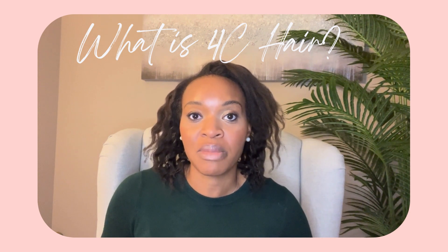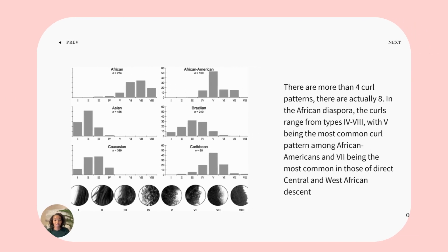I've seen curl patterns that are much tighter, and that's what prompted me to do this video. I want to show you a curl typing system that goes from one to eight. This comes from a scientific study where researchers took hair samples from thousands of people around the world and used very specific measuring tools to calculate the degree of each curl angle to find out how many curl patterns exist. When they looked at thousands of samples, they found that hair shaping really fell into one of eight categories.